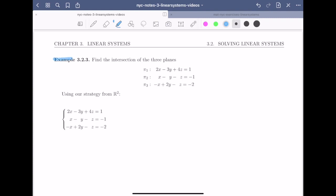Let's begin with example 3.2.3. We want to find the intersection of the three planes: pi 1 which is given by the equation 2x minus 3y plus 4z equals 1, pi 2 which is given by x minus y minus z equals minus 1, and pi 3 which is given by minus x plus 2y minus z equals minus 2.